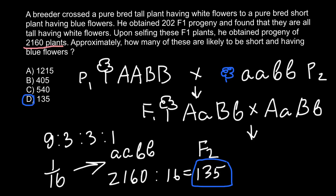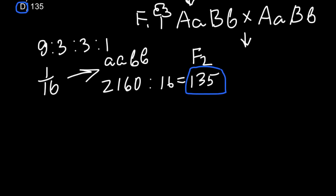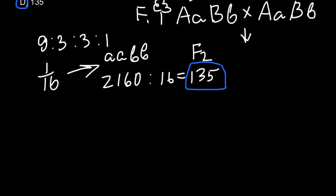I also said I would explain how to solve such problems using the forked line method. In the F1 generation we have a dihybrid cross — we are crossing the heterozygous genotype with itself. When genes do not reside on the same chromosome they segregate independently, which means we can build a Punnett square for each gene pair separately.